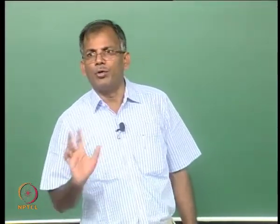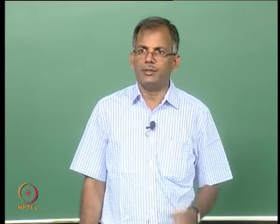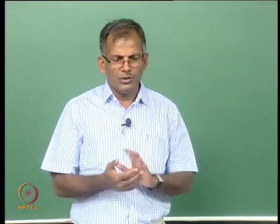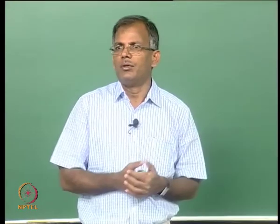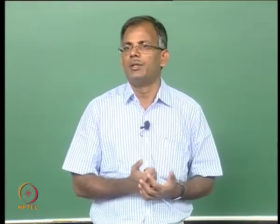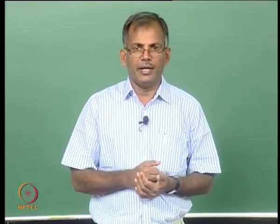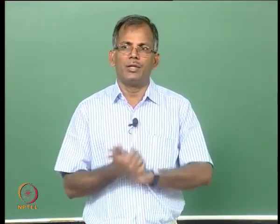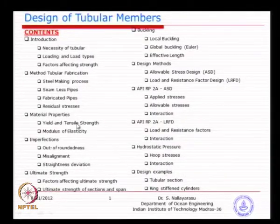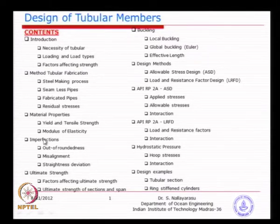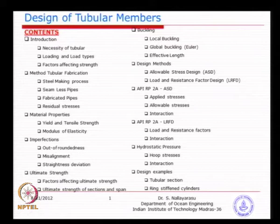Let us start the third module, basically the design of tubular members. In this module, we have to cover a little bit of background starting from basics of mechanics, basics of materials, how these tubulars are made, the properties of these materials, how they are derived, what are the imperfections involved in the manufacturing process of pipes and assembly of structures, and finally the ultimate strength of assembled structures so that we can apply a factor of safety to arrive at the allowable strength.